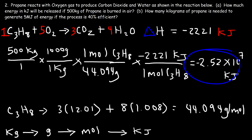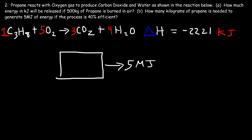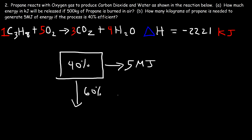Now for Part B: how many kilograms of propane are needed to generate 5 megajoules of energy if the process is 40% efficient? We need to generate 500 megajoules of usable energy. 40% of the energy released will be in usable form; the other 60% will be lost due to heat, friction, or escape into the environment. Only 40% of the energy released is captured usefully. So we ask: 40% of what number equals 5? That's 5 divided by 0.4, which equals 12.5.